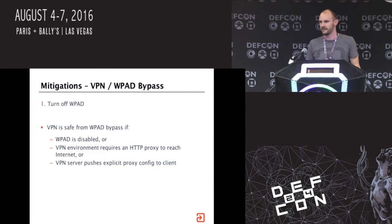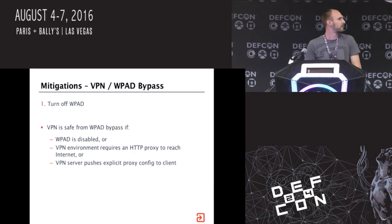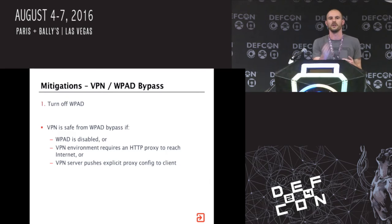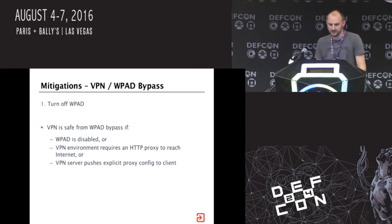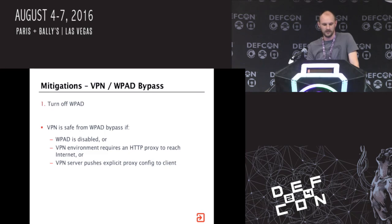To mitigate VPN issues: turn off WPAD. VPN is safe if WPAD is disabled. If the VPN environment requires a proxy server to get out to the internet, it effectively mitigates this issue - we can't chain proxies using PAC as far as we're aware. Or if the VPN server pushes an explicit proxy configuration, this won't be an issue. That's certainly an option on a lot of enterprise-level VPN solutions.